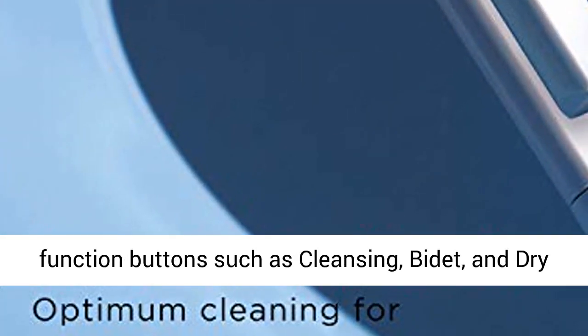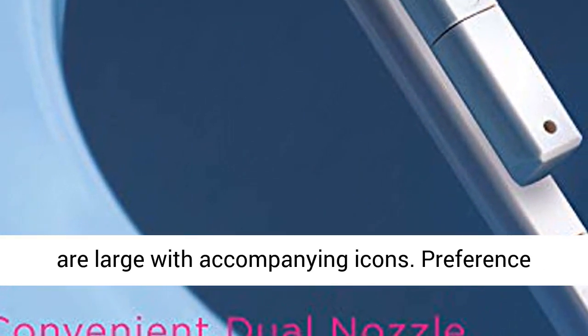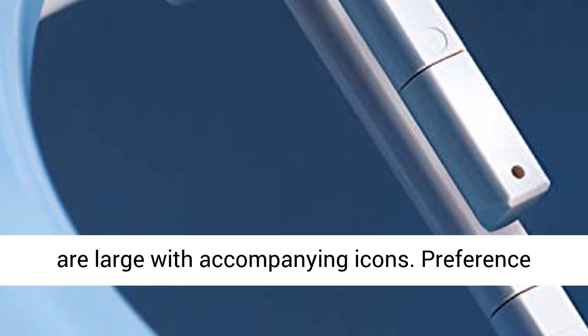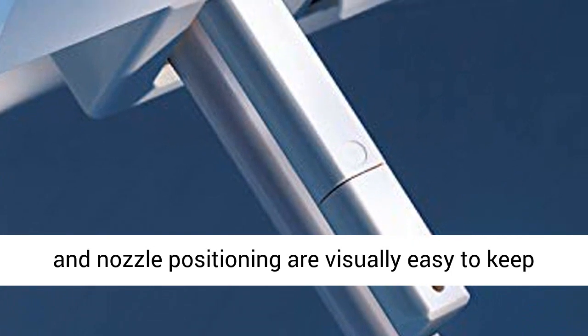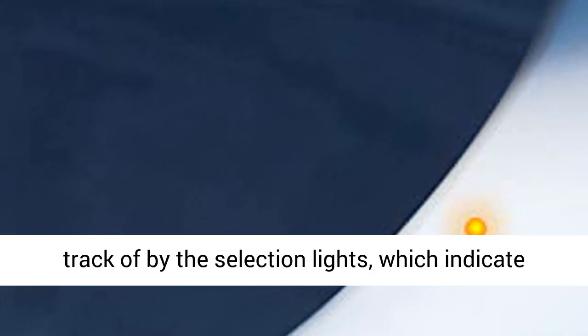The main function buttons such as cleansing, bidet, and dry are large with accompanying icons. Preference buttons such as water temperature, water pressure, and nozzle positioning are visually easy to keep track of by the selection lights, which indicate the selected level.